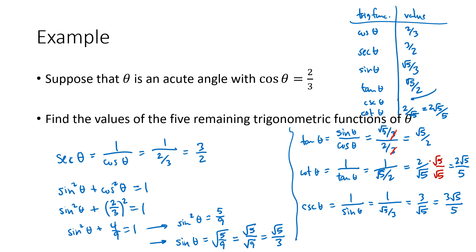Rationalizing the denominator if necessary, that's three radical five over five. So we would put in three over the square root of five, or alternatively three radical five over five for cosecant. That shows you how we can use the different identities and relationships to figure out the values of all six trig functions once we know one of the trig values.